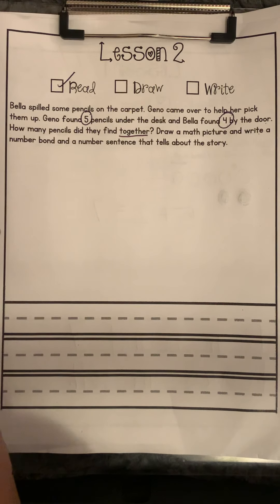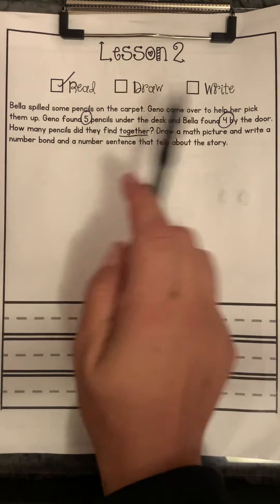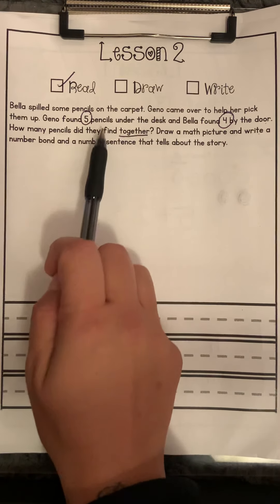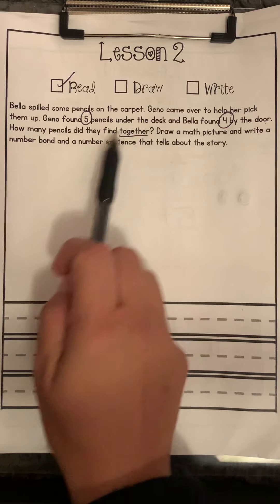And we know that together is one of our keywords that knows that we need to add. It helps us understand that we need to add these two numbers together because the number is all together how many they found.